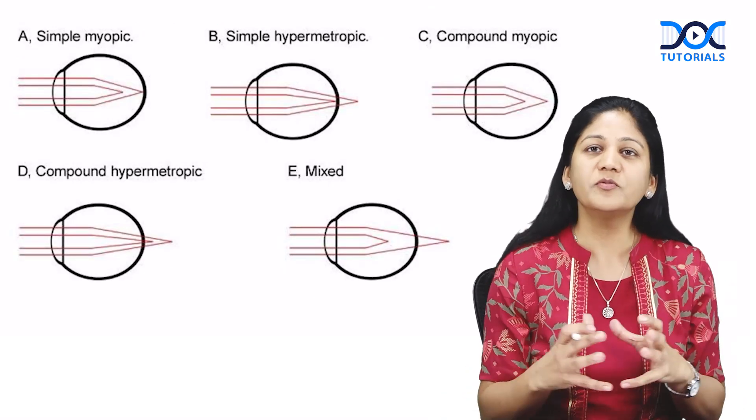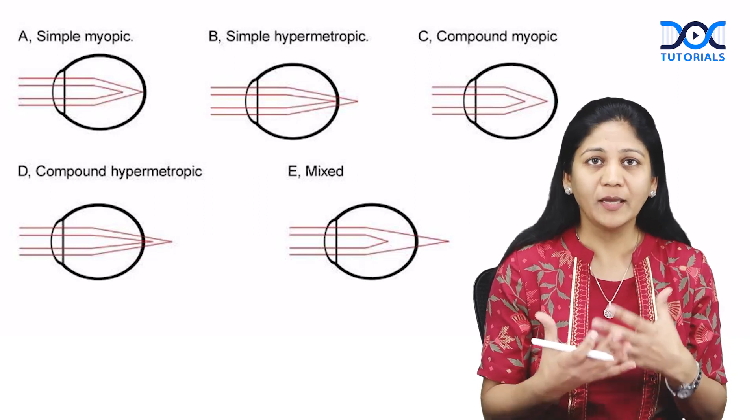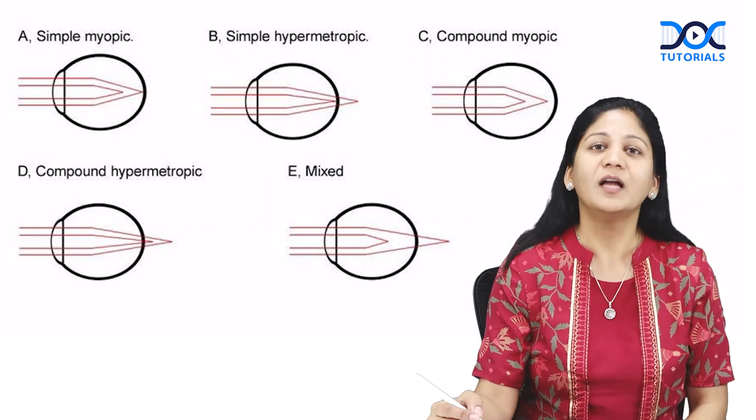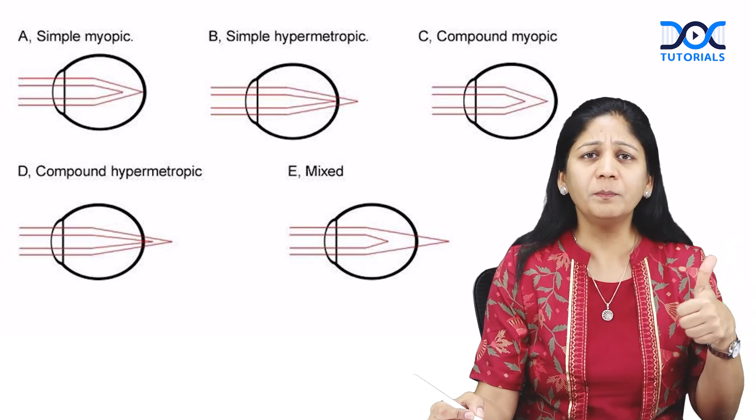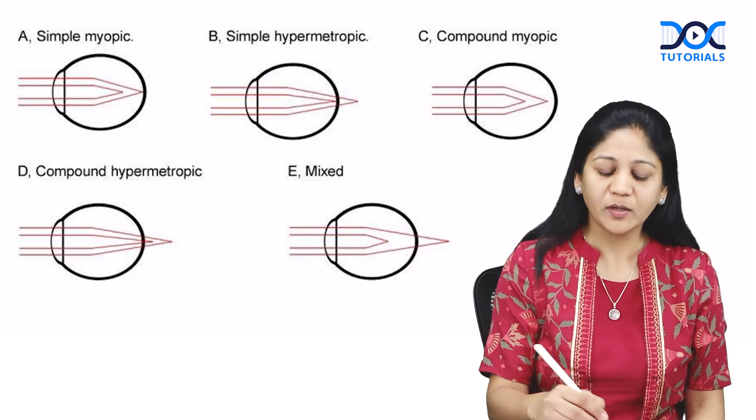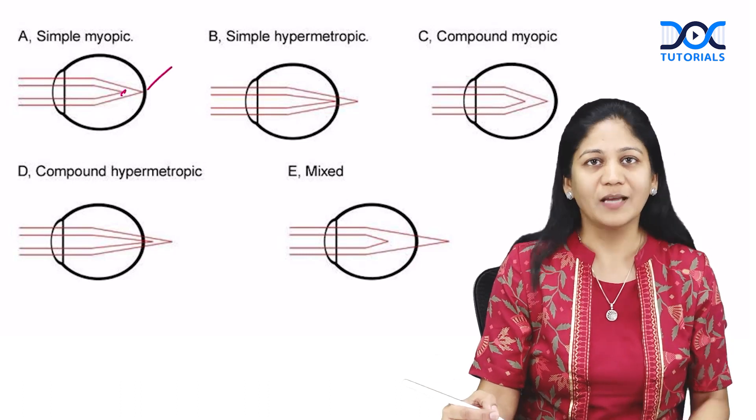Looking at different types of astigmatism with ray diagrams, you'll see we have five types. The first is simple myopic astigmatism, where one ray of light is focused at the retina and another in front, as in myopia.